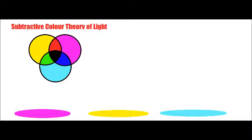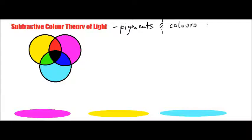When dealing with the subtractive color theory of light, we are really referring to pigments — pigments and the different colors that are actually absorbed or reflected. What are we referring to when we're talking about pigments? Really, a pigment is a powder that's actually used for color substances.